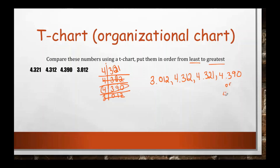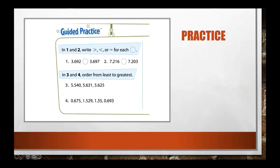Remember, four and three hundred ninety thousandths can also be written as four and thirty-nine hundredths — these are equivalent numbers. So that's how you use a T-chart to organize numbers more easily: line them up with the decimal point where this line is, and line up each number in the correct place value so you can go one column at a time to find the lowest and greatest numbers. Now let's practice using this information with comparing.